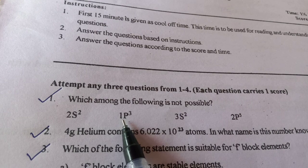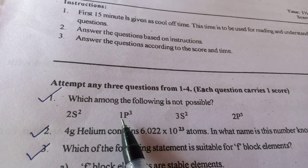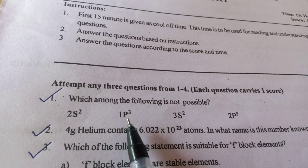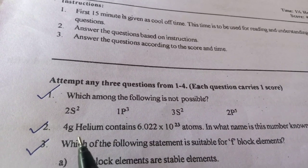1p3, because in first shell we have 1s2, 1s2 only, no p subshell.